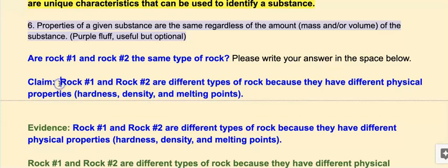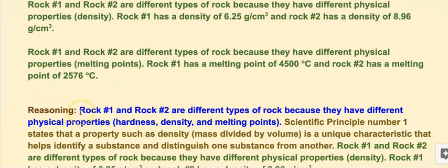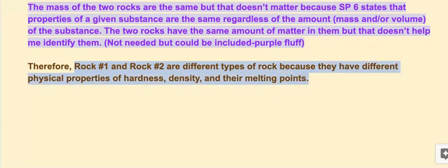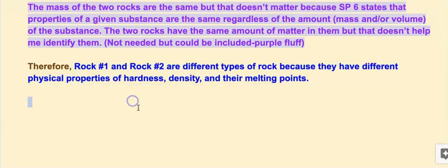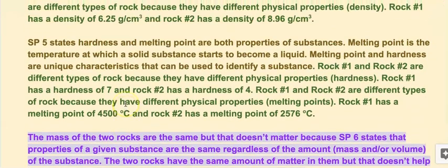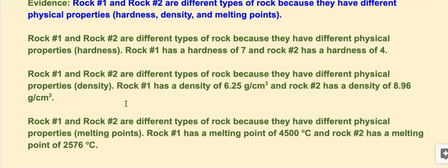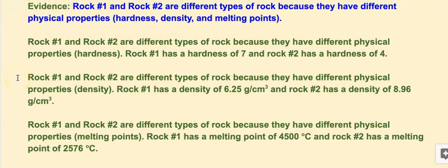Once I have my claim, I like to highlight it, copy it, paste it under the evidence, and then paste it under the reasoning once and twice. Now I'm going to go back up and list my evidence. I want to put my claim in here because when I'm writing my evidence, I want to make sure I know what I'm writing towards so I don't get off track. The three things I want to identify here are the hardness, the density, and the melting point.